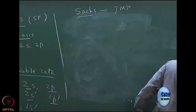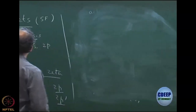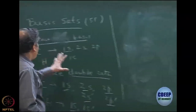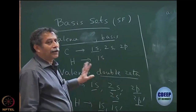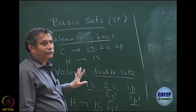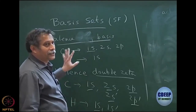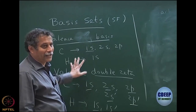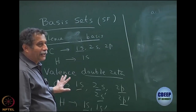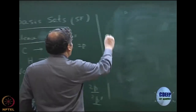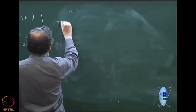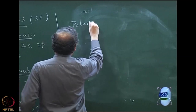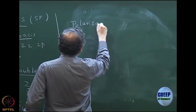Basis sets with only valence functions are not good enough today. You cannot publish any paper with just valence basis sets. It is very important to realize this. You must use what are called polarization functions. That is very important.